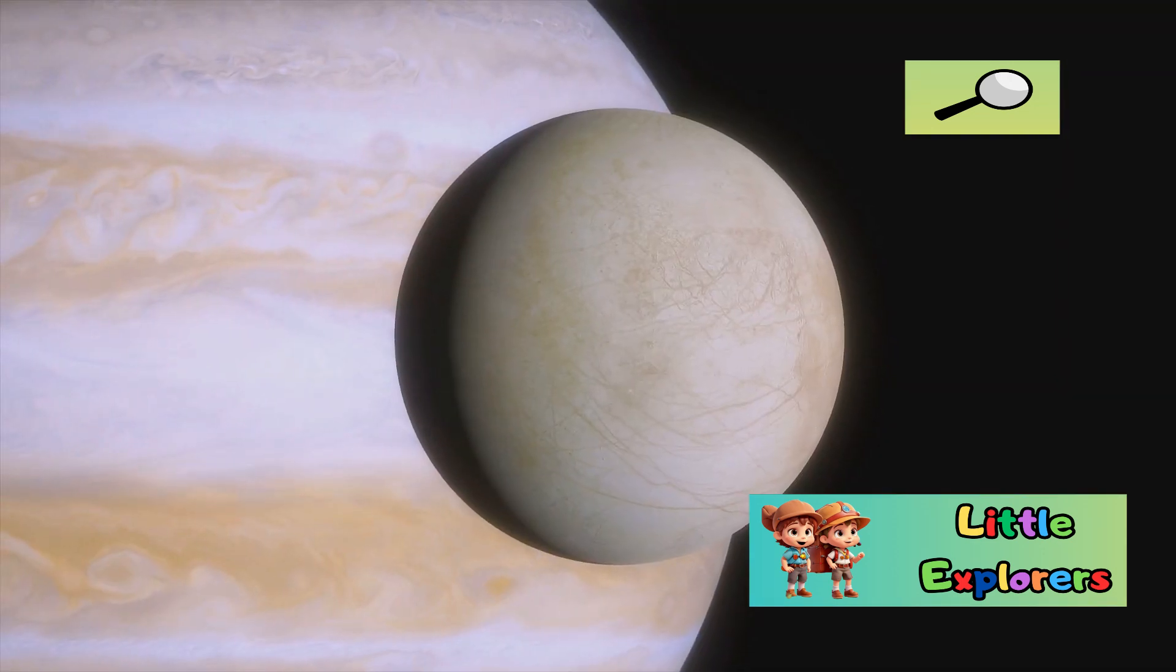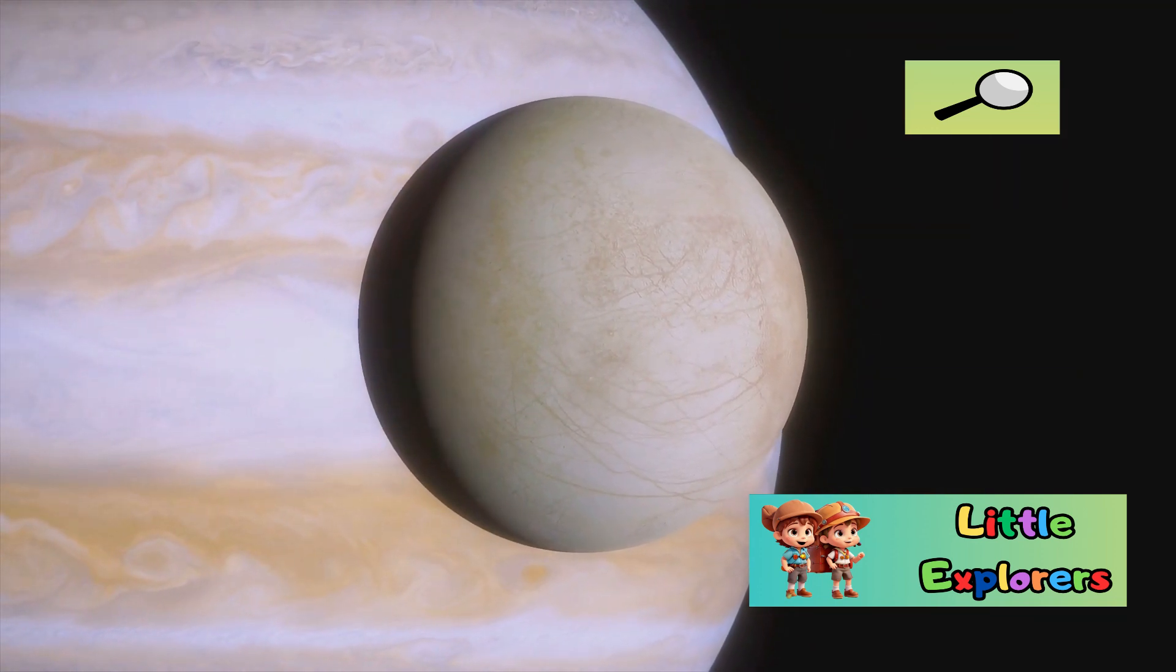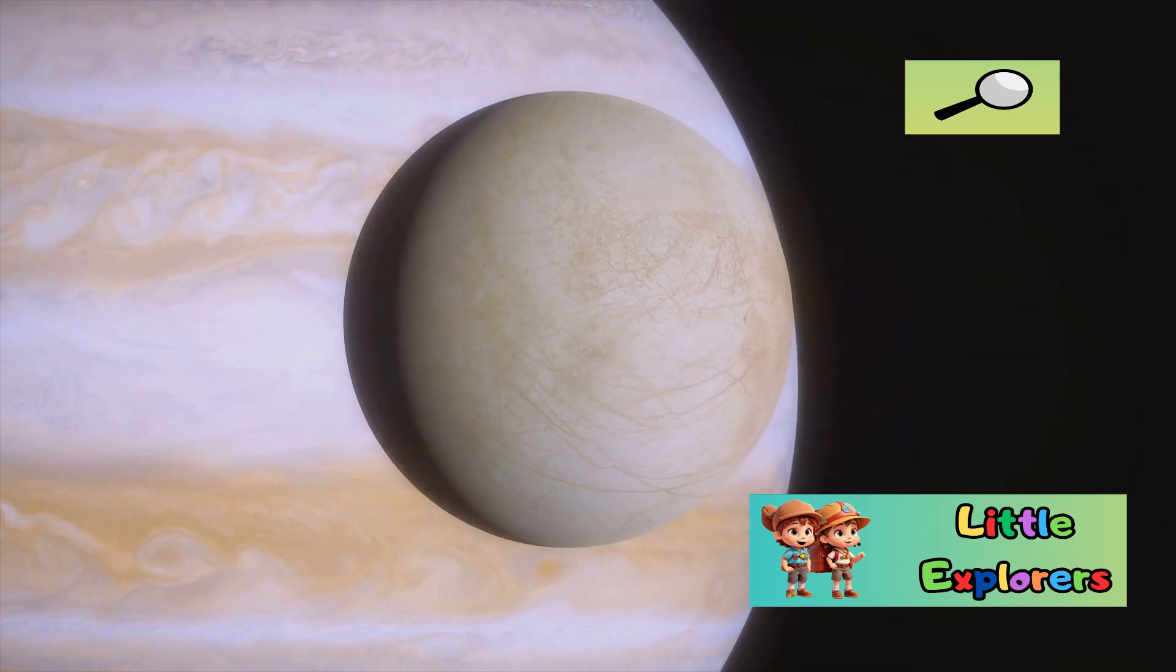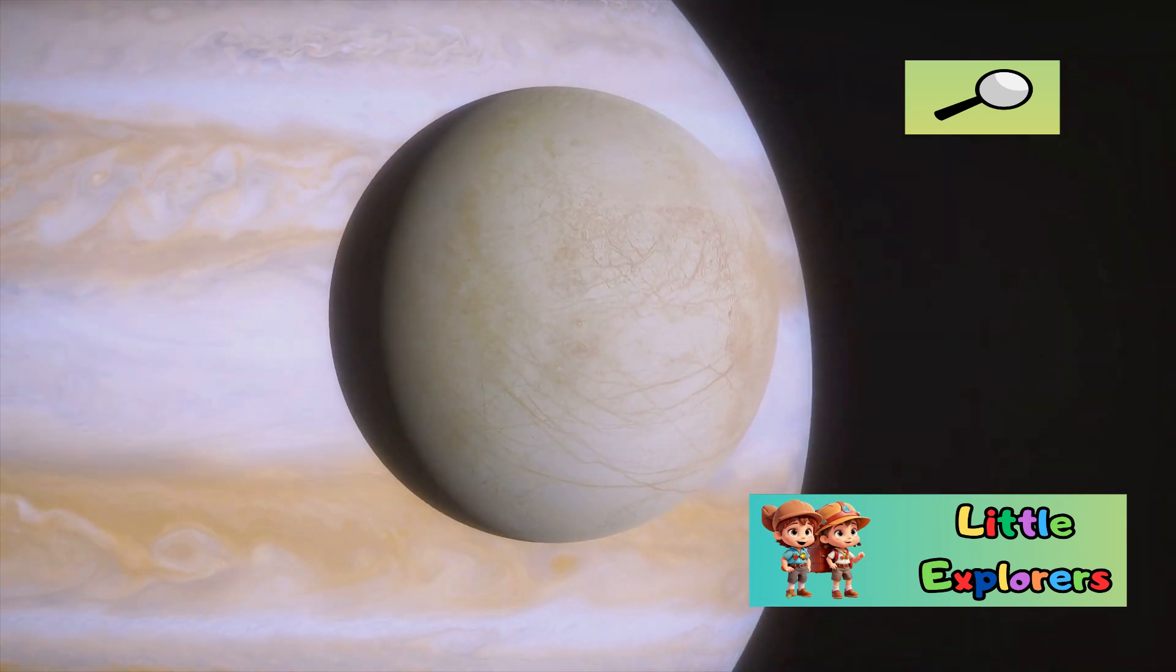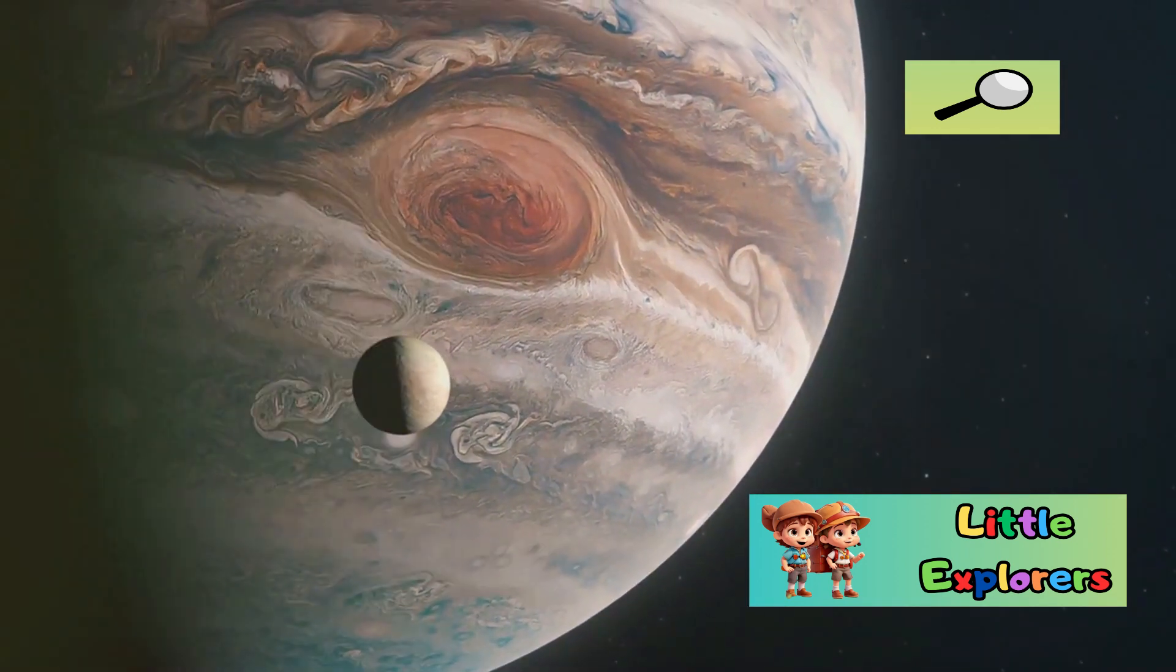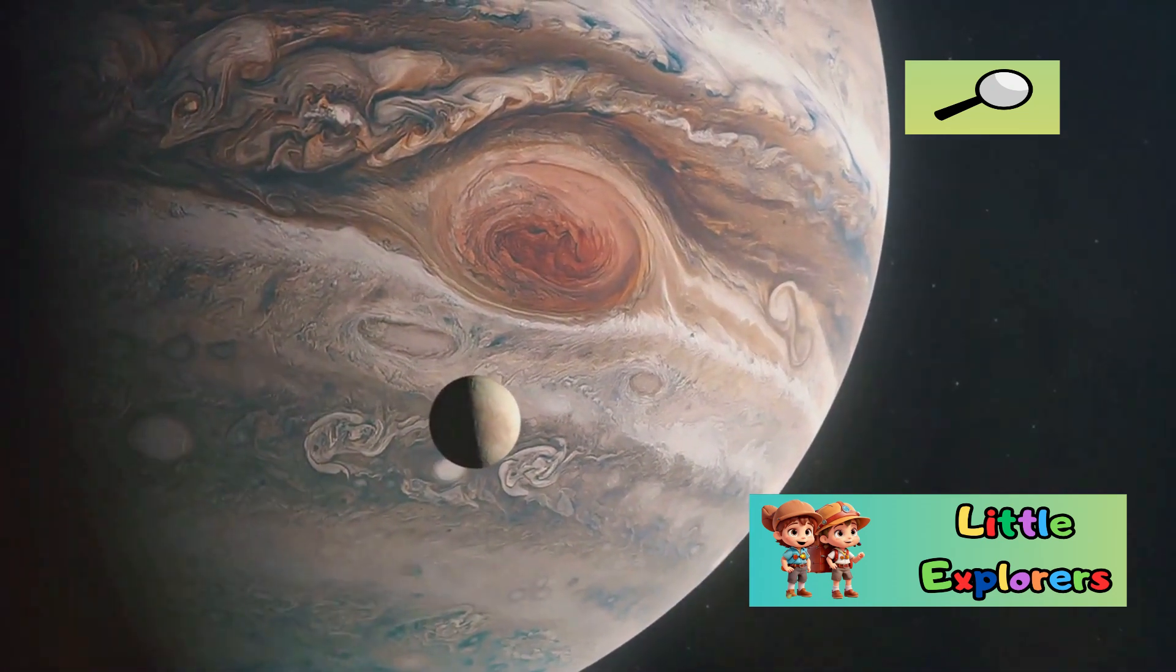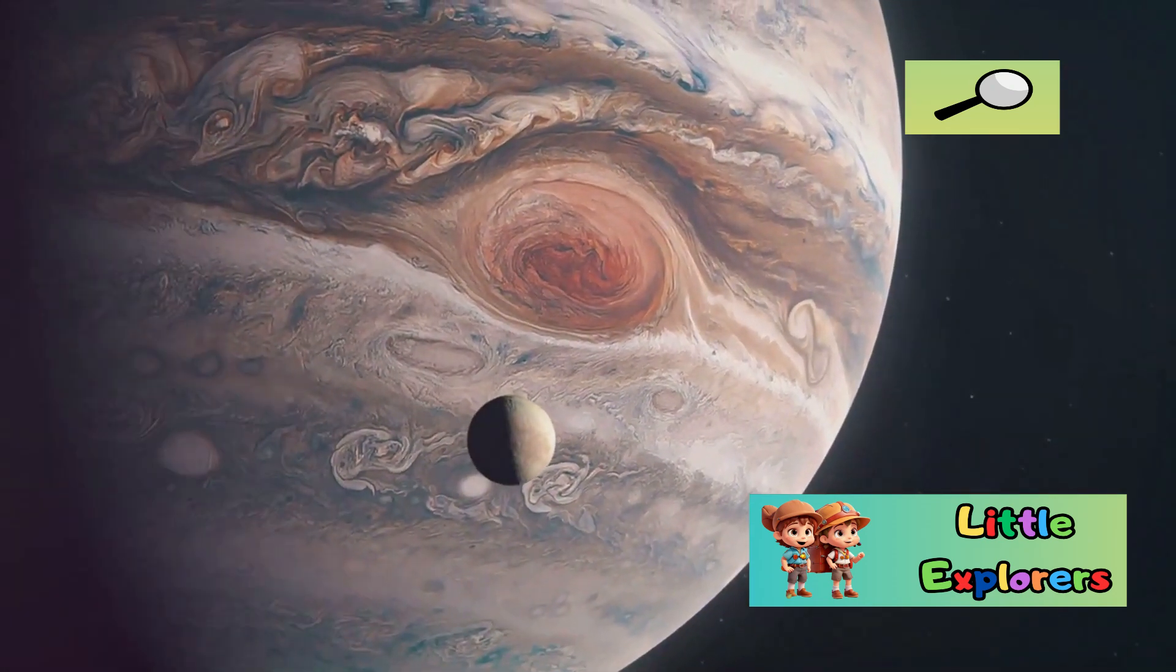Europa, a moon of Jupiter, is thought to have a vast ocean beneath its icy surface. This hidden ocean, kept liquid by the moon's internal heat, presents another intriguing possibility for extraterrestrial life. Scientists believe that the conditions in Europa's subsurface ocean could be similar to those in Earth's deep oceans, where life thrives in extreme environments.